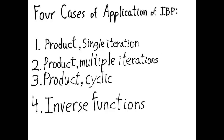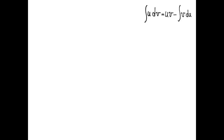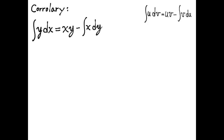The next case is inverse functions. The process of integration by parts is suggested not only for things that look like product rules, but also for things that look like inverse functions. A corollary to the formula is that the integral of y dx equals xy minus the integral of x dy. If y is the inverse of a function we can integrate, then integrating y with respect to x is equivalent to integrating the inverse function — x as a function of y.